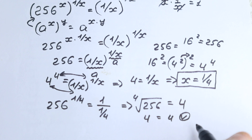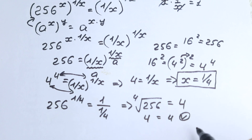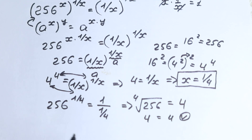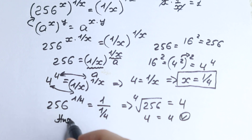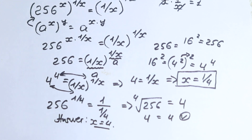I know that a lot of students can solve this by themselves and find other great tricks. I hope you write your approach down in the comment section — what do you think? I wish you all the best in your mathematical adventures. Thank you for your time and have a great day. My final answer is x equal to 1 over 4.